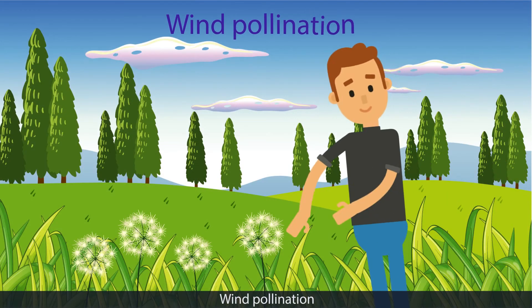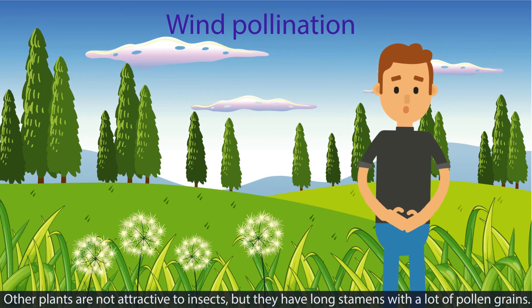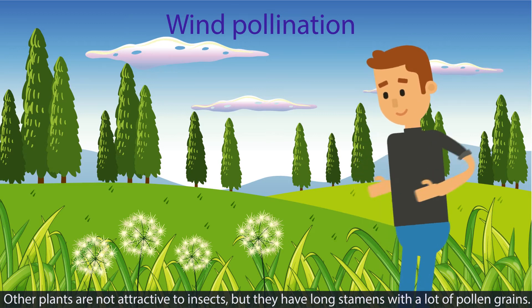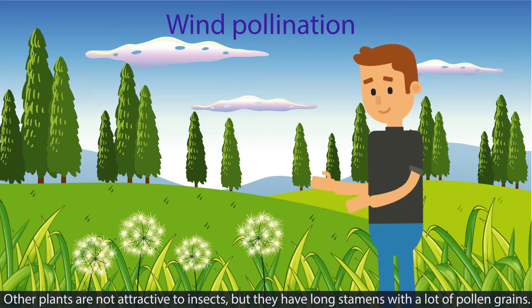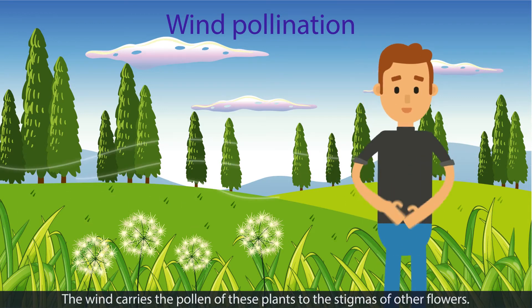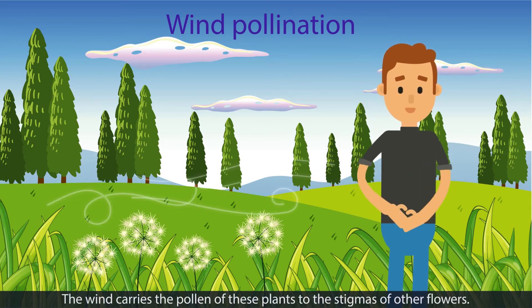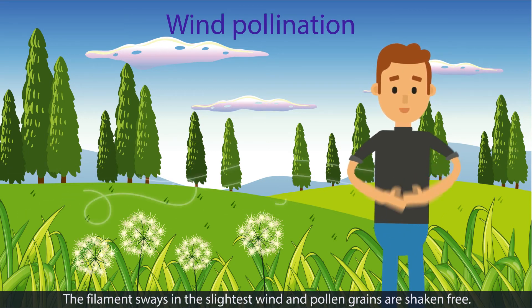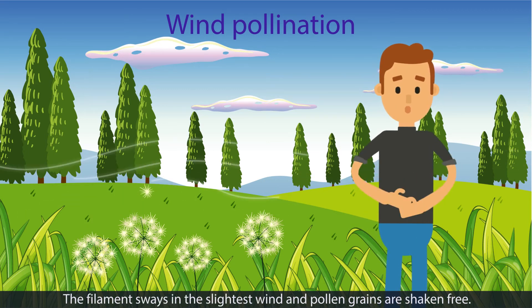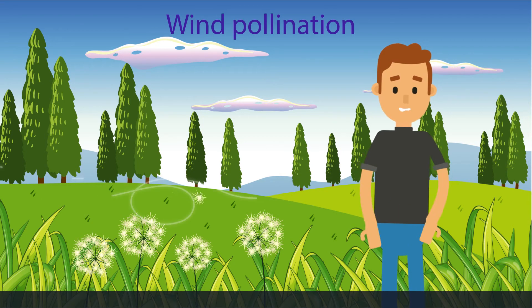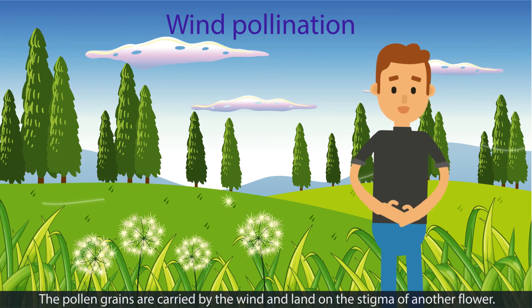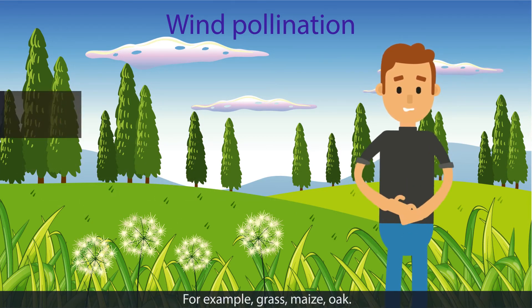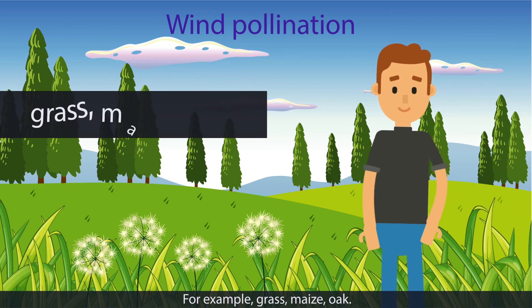Wind pollination. Other plants are not attractive to insects, but they have long stamens with a lot of pollen grains. The wind carries the pollen of these plants to the stigmas of other flowers. The filament sways in the slightest wind and pollen grains are shaken free. The pollen grains are carried by the wind and land on the stigma of another flower. For example, grass, maize, oak.